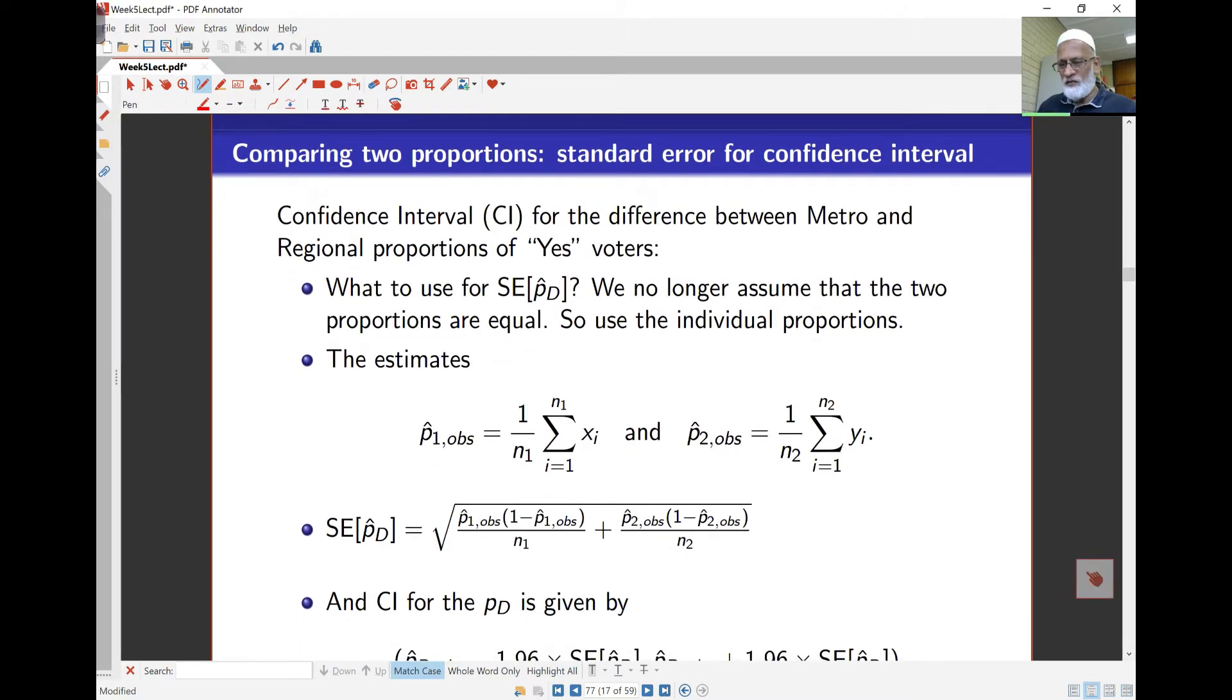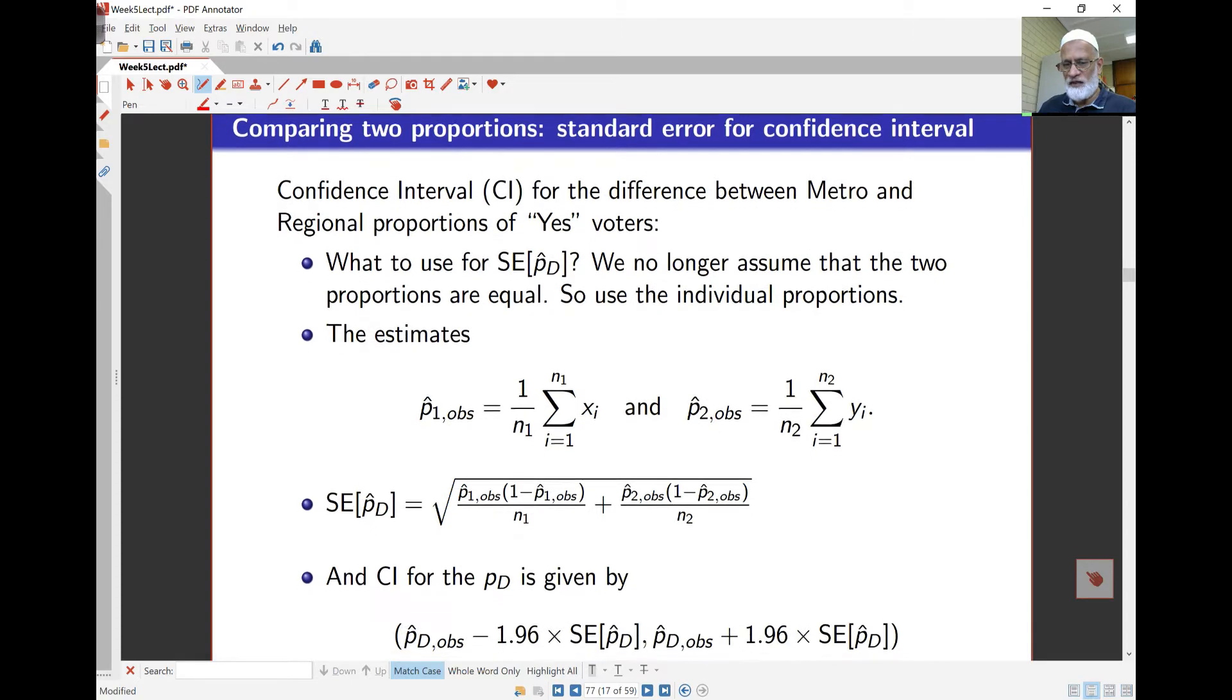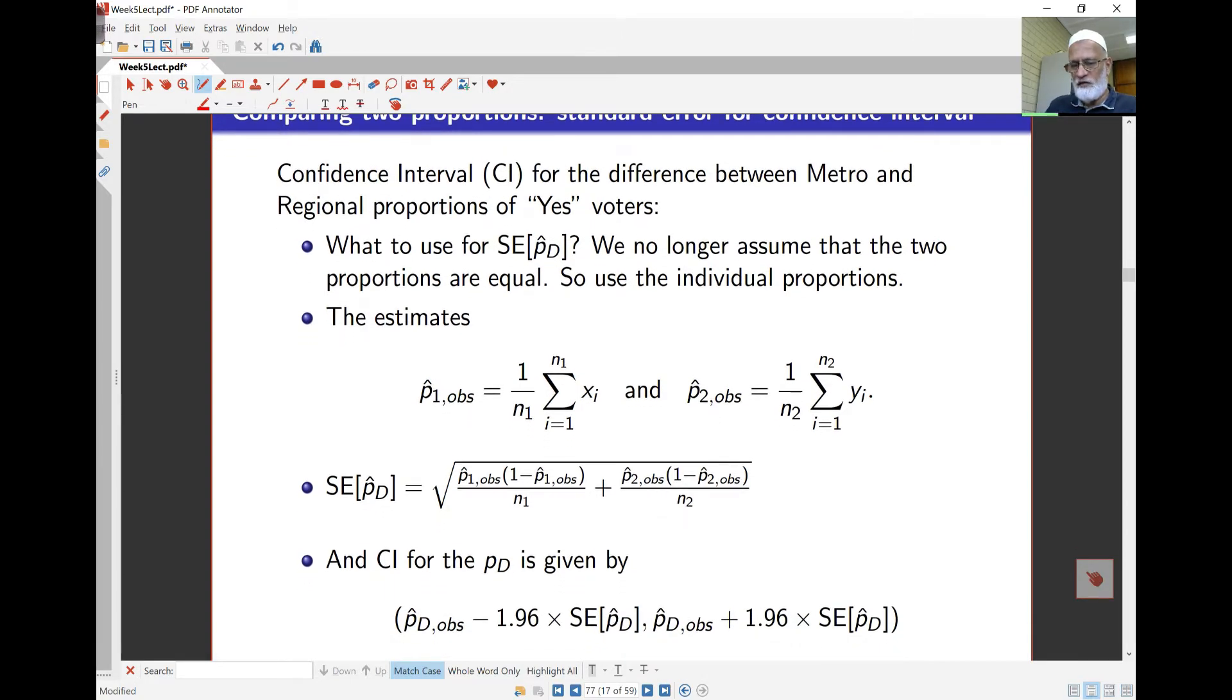We don't assume these two proportions are equal. So in this case, all we do is in the formula for the standard error that we had, we're going to put in each of those separate proportions, P1 hat and P2 hat observed, as calculated from the data. Other than that, nothing else changes.